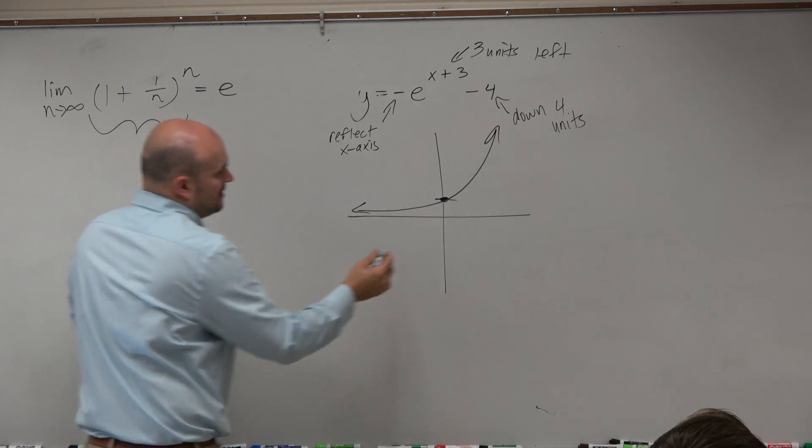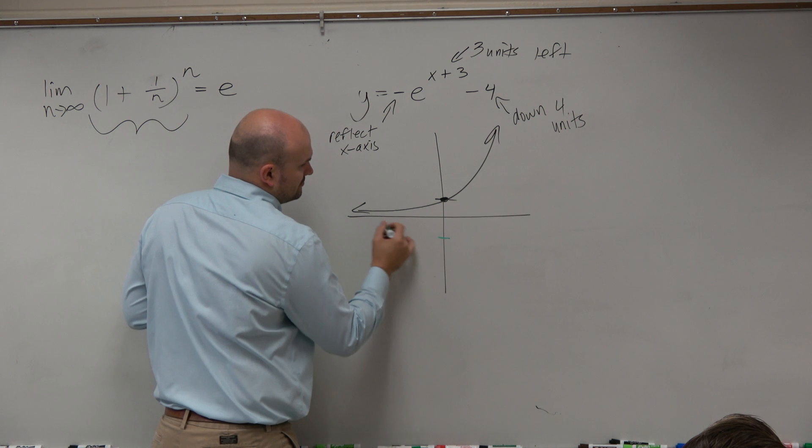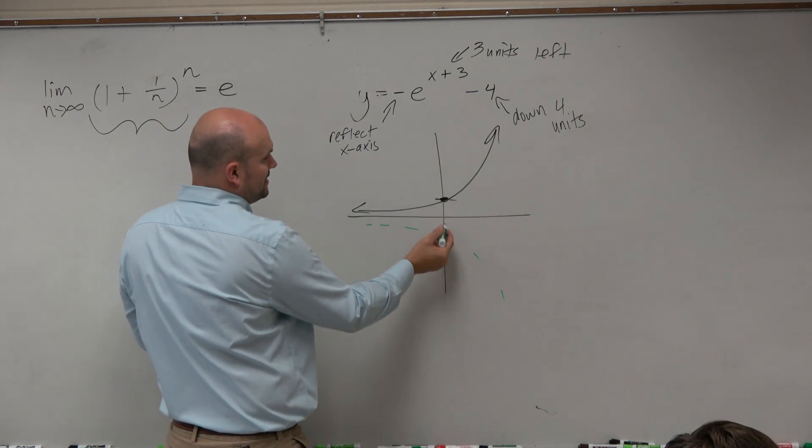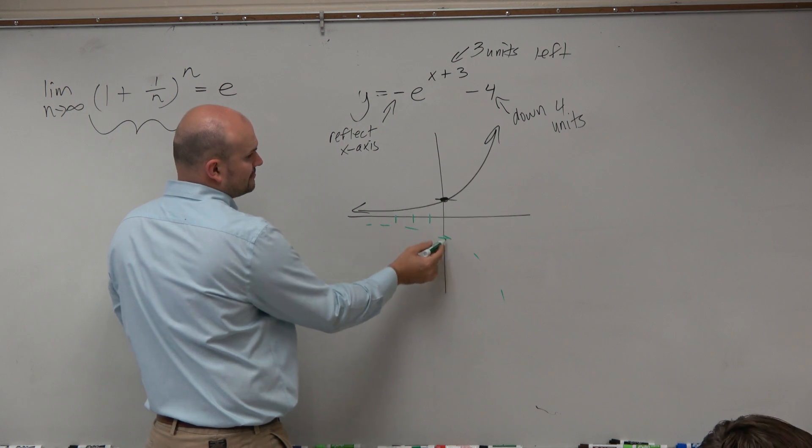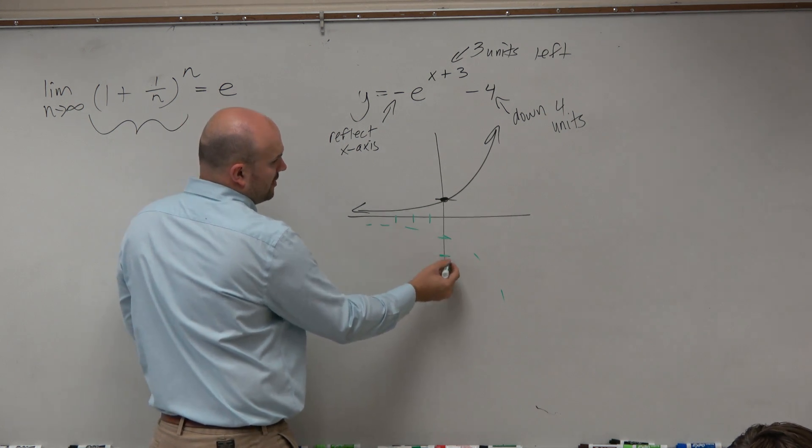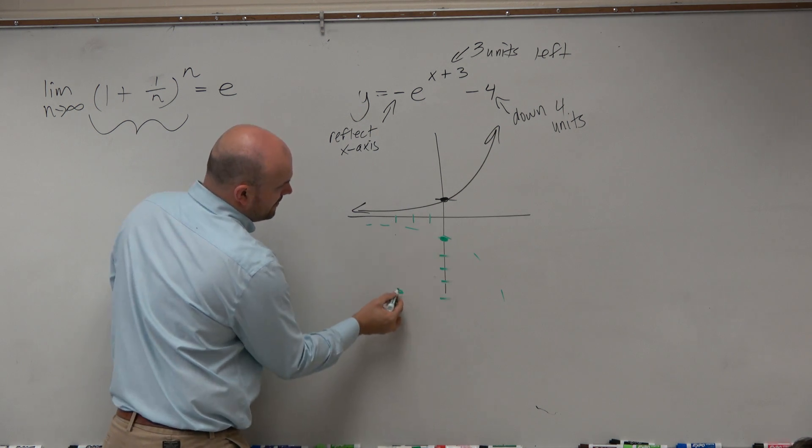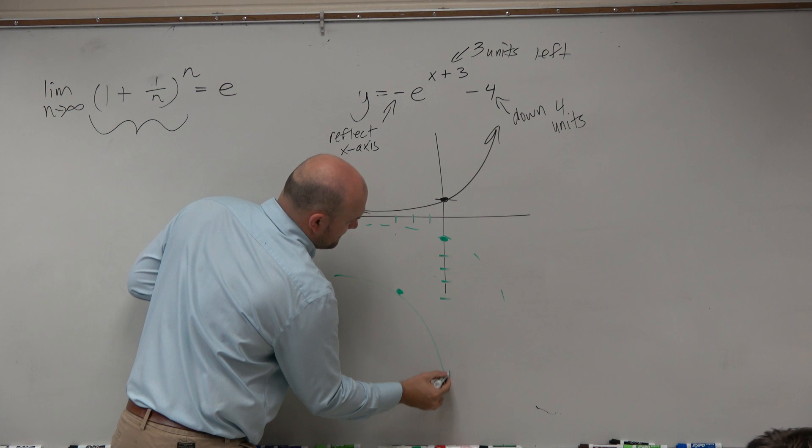So my graph is going to look something like this. First, I reflect it. I'm going to go left three: one, two, three. And then down four: one, two, three, four. So there's my x-intercept.